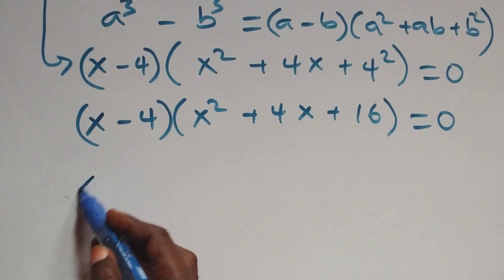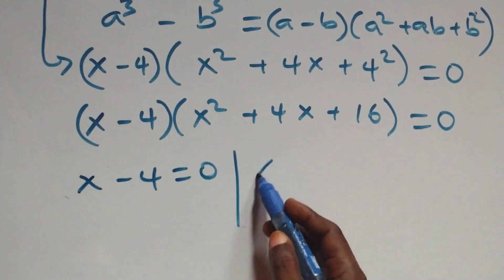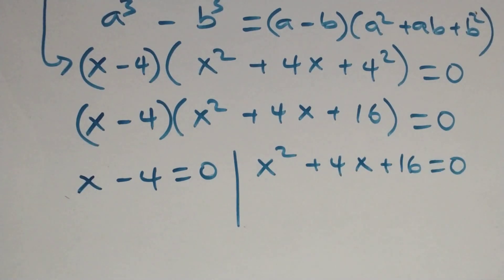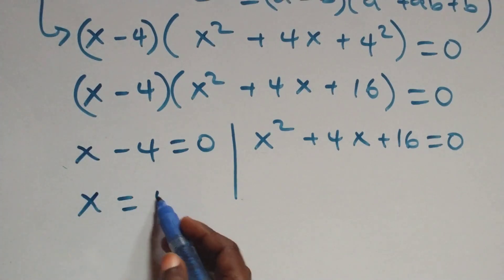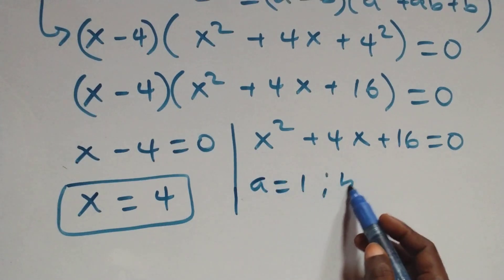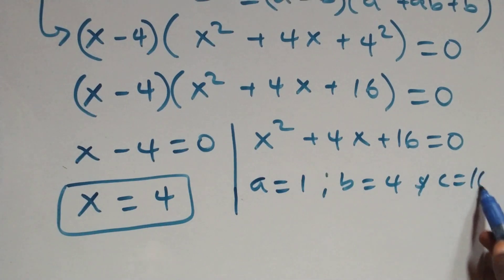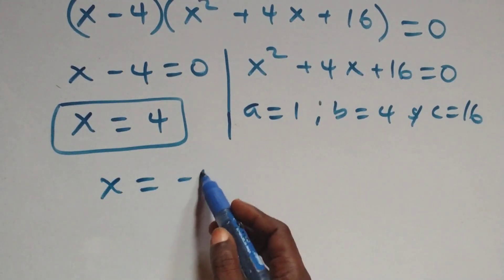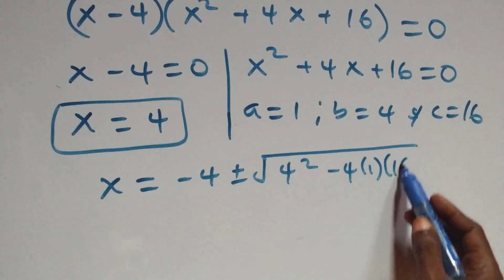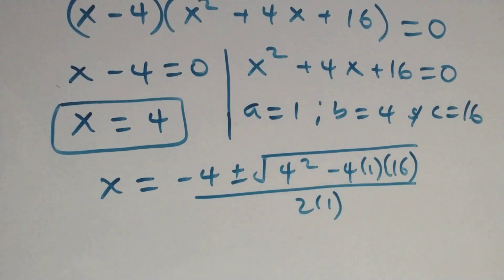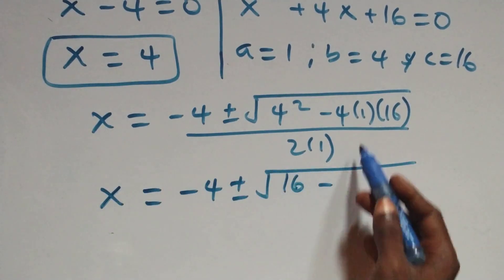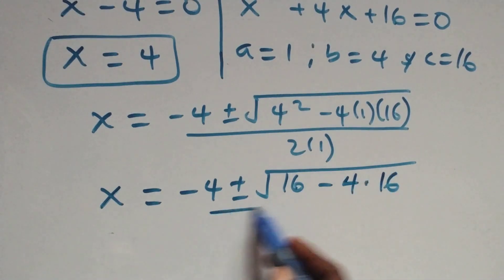We again have two possible sub-cases. First: x minus 4 equals 0, giving x equals 4, which is a real solution. Second: x squared plus 4x plus 16 equals 0, where a equals 1, b equals 4, and c equals 16. Applying the quadratic formula, x equals minus 4 plus or minus square root of 4 squared minus 4 times 1 times 16, all over 2 times 1.